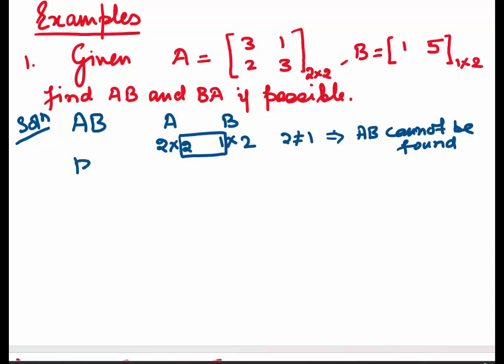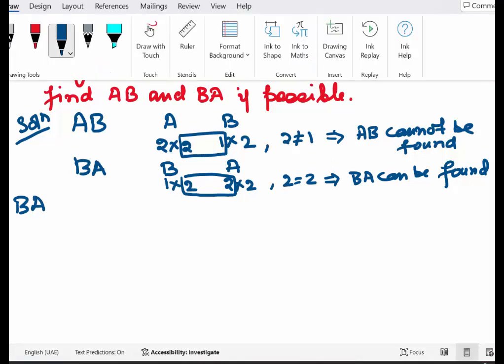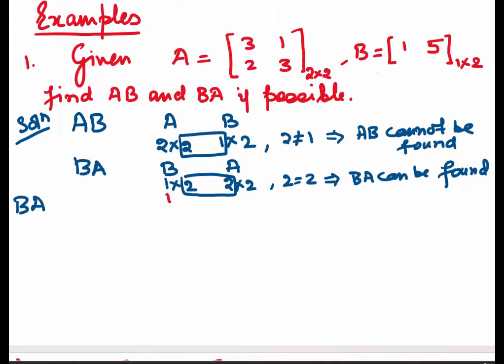Now let us check for BA. As it is BA, we write the order of B first: 1 by 2, then write the order of A: 2 by 2. Check the inside numbers — 2 is equal to 2, which implies BA can be found. The order of BA will be given by the outside numbers: 1 by 2, meaning 1 row and 2 columns.